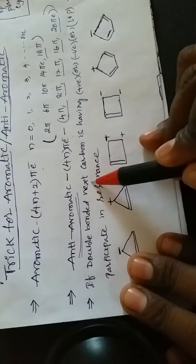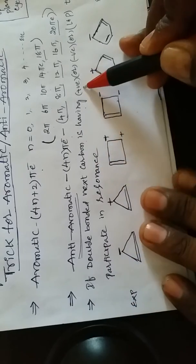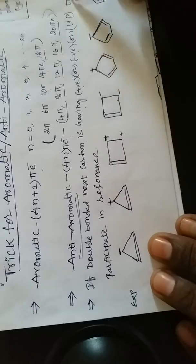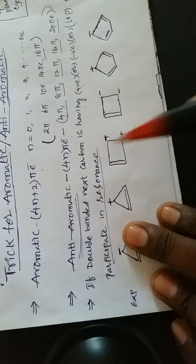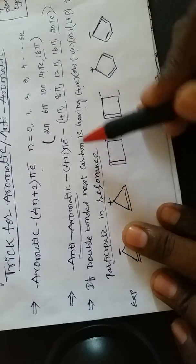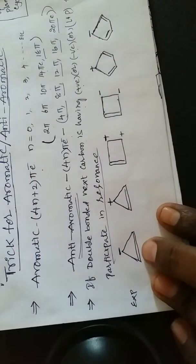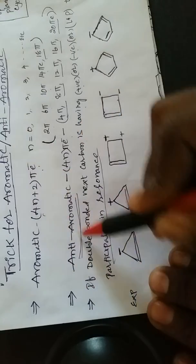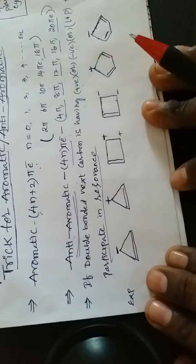The third important point: if a double-bonded carbon's next carbon has a positive charge, negative charge, or lone pairs, it participates in resonance. This participation in resonance is the main important trick for identifying aromatic and anti-aromatic compounds. Aromatic formula: 4n+2 pi electrons; anti-aromatic formula: 4n pi electrons.